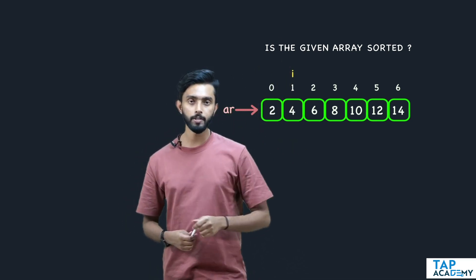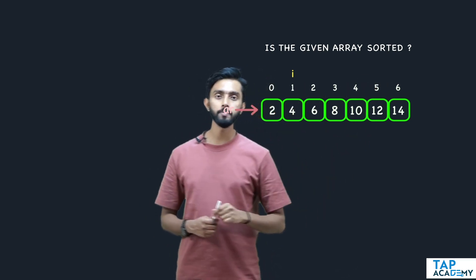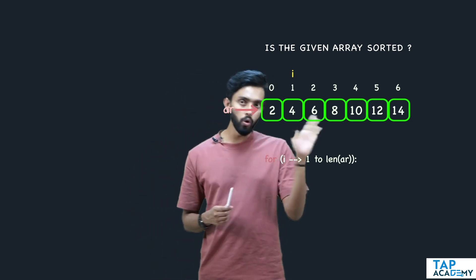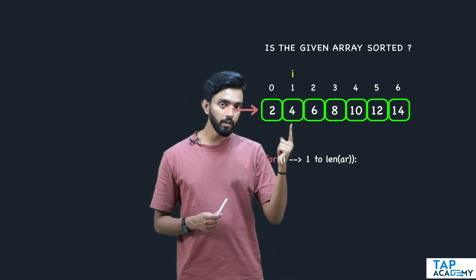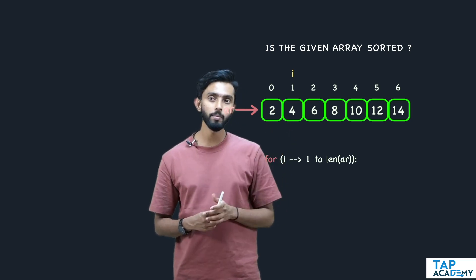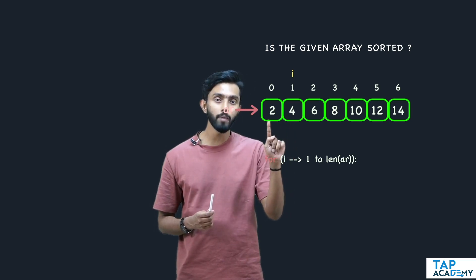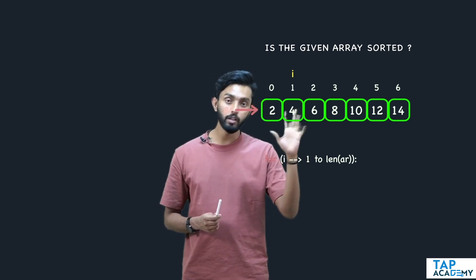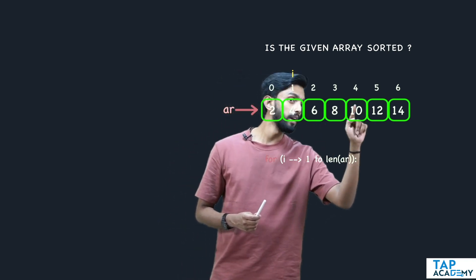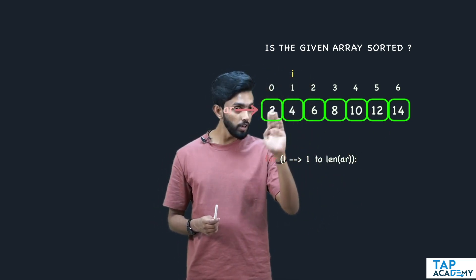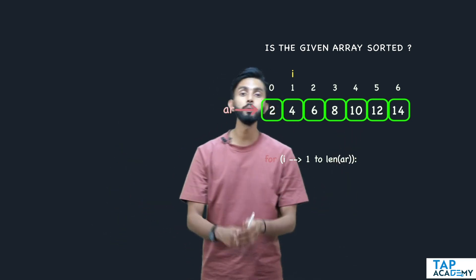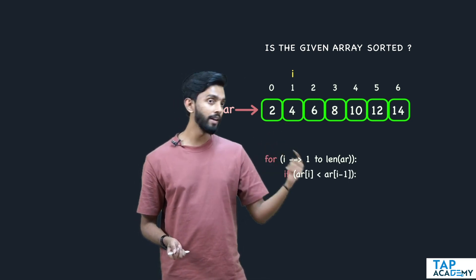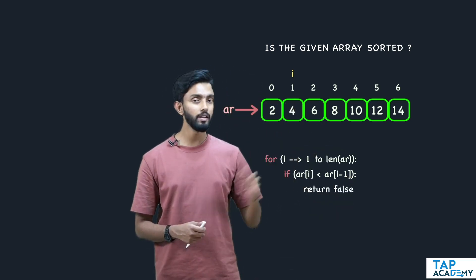What I would propose is: set i from the second element, run a loop from the second element to the last element. For i starting from one to the length of the array, if the array was truly sorted then the ith element should be greater than the previous element at i minus one. If the ith element is lesser than the i minus one element, the condition of sorting fails. So if ar[i] is lesser than ar[i-1], just return false because you know the array is not sorted.